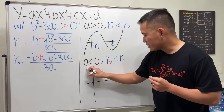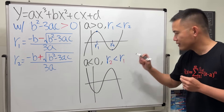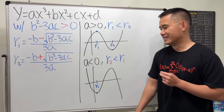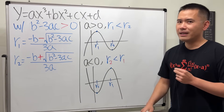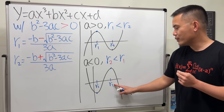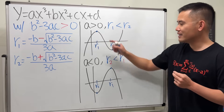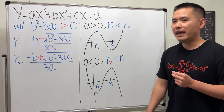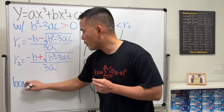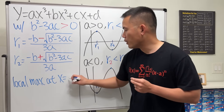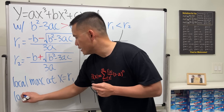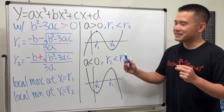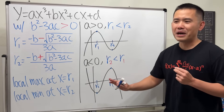Let's look at the graph once again. This time it's the upside-down version — going down, up, down. At the first point, because r2 is smaller, that's r2 — the local minimum. At the second point we have r1 — the local maximum. So it doesn't matter what a is: we will always have local maximum at x equals r1 and local minimum at x equals r2. And that is the summary for finding the local min and local max without calculus.